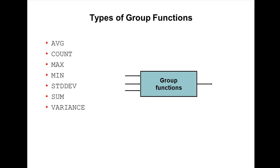Variance gives the variance of n, ignoring null values. Standard deviation and variance are used in statistics. Average, count, max, minimum, and sum are the common group functions used in Oracle. All these group functions ignore nulls except count. When you use COUNT(*), it counts rows including nulls and duplicates. But when you use COUNT with a column name or expression, it gives only the number of rows ignoring null values.